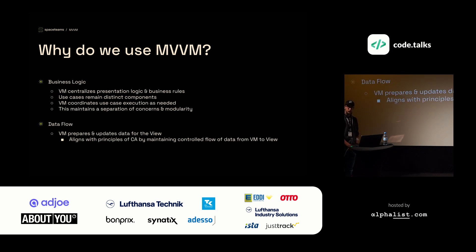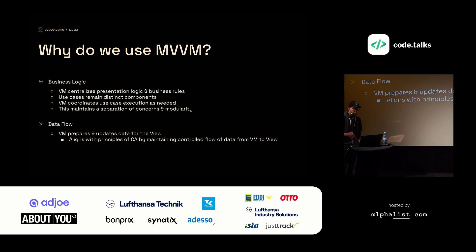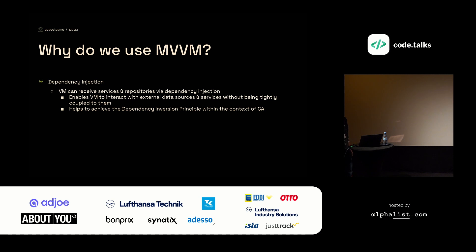Why do we use MVVM for creating this clean architecture React application? Next to the view model, which centralizes our presentation logic and business rules, we also have distinct components for our use cases. The view model can coordinate the use case execution as needed, helping maintain separation of concerns and modularity. The view model prepares and updates data for the view, aligning with clean architecture's controlled data flow. We're also using dependency injection — the view model can receive services, repositories, or use cases via dependency injection, enabling it to interact with external data sources without being tightly coupled to them. This helps achieve the dependency inversion principle in the context of clean architecture.